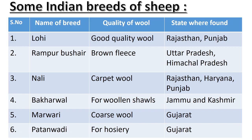The first breed is Lohi. It yields good quality wool and is commonly found in Rajasthan and Punjab. Rampur Bushair is the second breed. It produces brown fleece and can be found in Uttar Pradesh as well as Himachal Pradesh. The third breed is Nali. The quality of wool they produce is used to prepare carpet, hence commonly known as carpet wool. They are found in Rajasthan, Haryana, and Punjab.